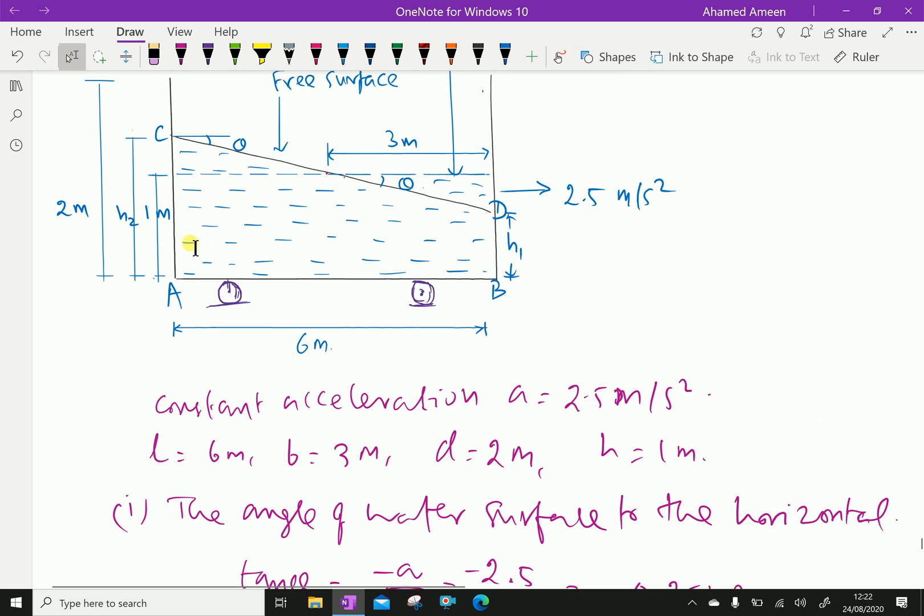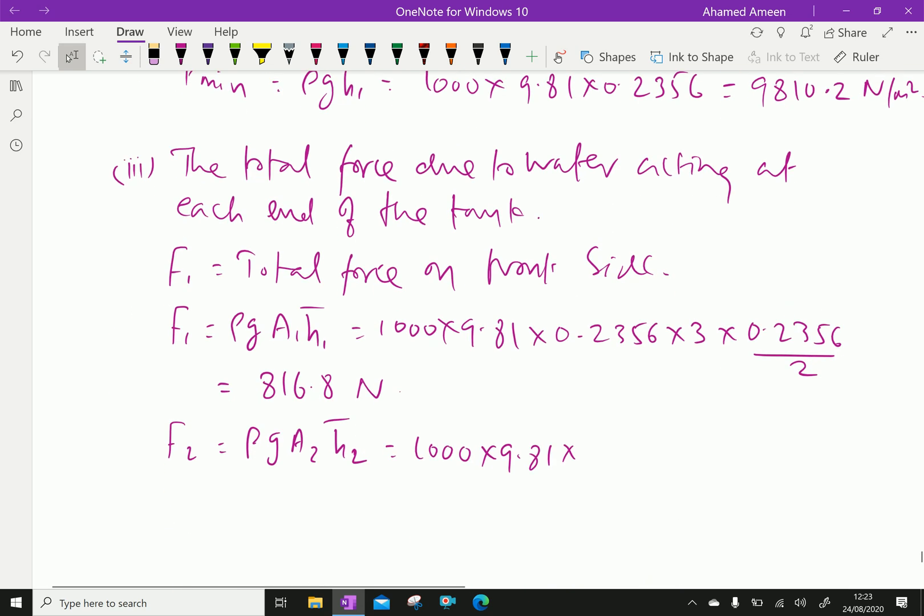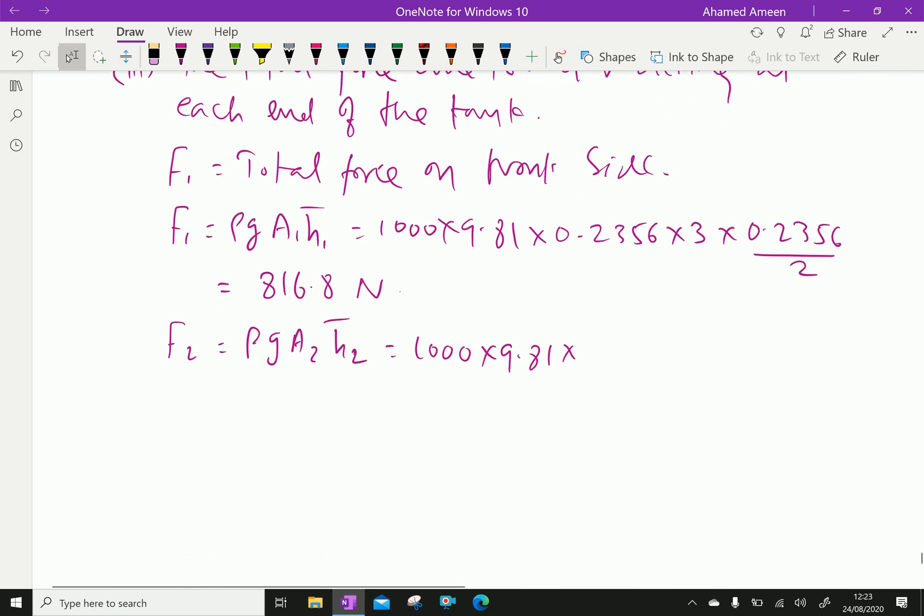h2 is 1.7644 meters, width is 3, times h bar which is 1.7644 divided by 2. By this calculation, we have 45809.4 Newtons.